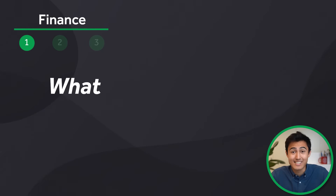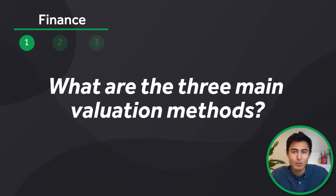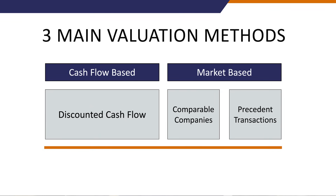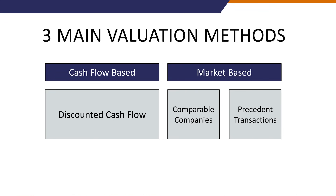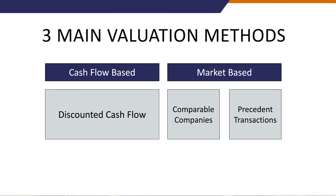Next up: finance questions. What are the three main valuation methods? These are the discounted cash flow (DCF), comparable companies analysis, and precedent transactions analysis. The DCF is an internal valuation method — the company looks at its own cash flows to determine a value. Comparable companies analysis looks at what peer companies are doing and derives a valuation range using a ratio. Precedent transactions analysis is based on previous transactions with similar companies.